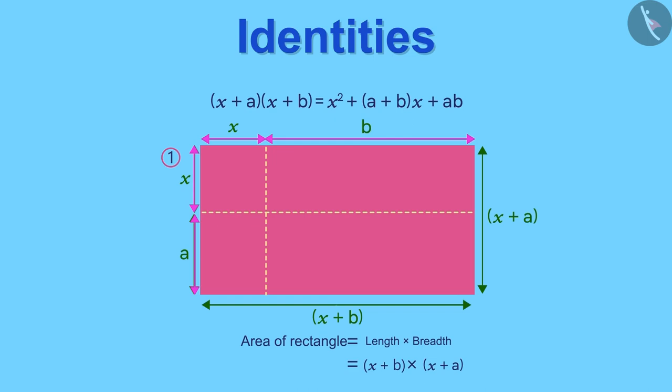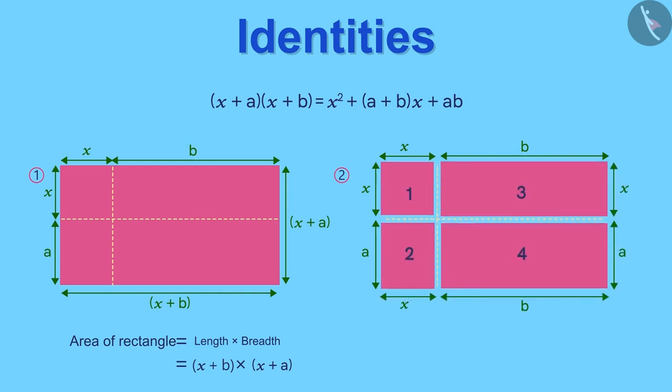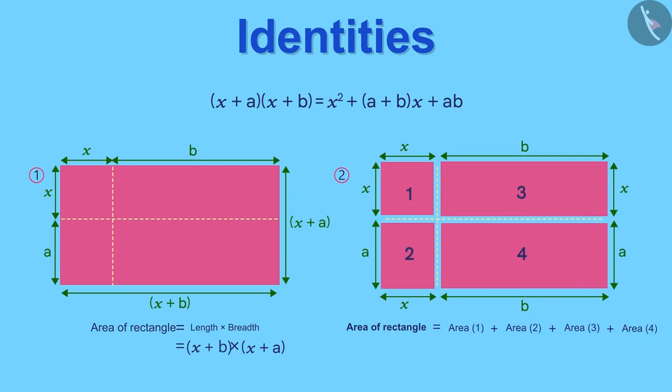Now, let us see the second way to find the area of this rectangle. As you can see that this rectangle is made up of four parts. So the area of this rectangle is equal to the sum of the areas of these four parts.